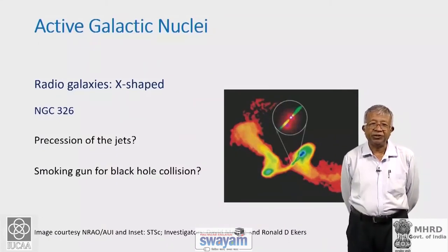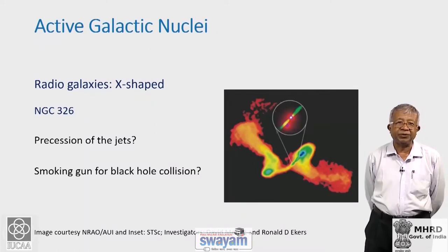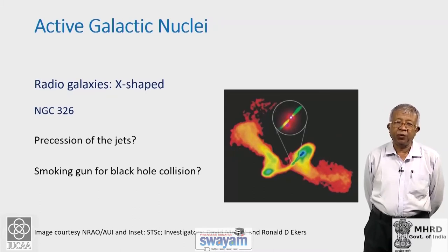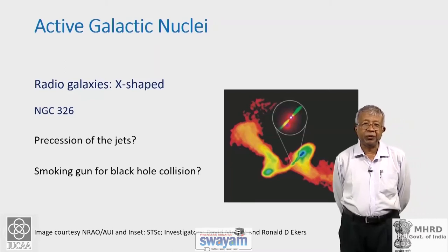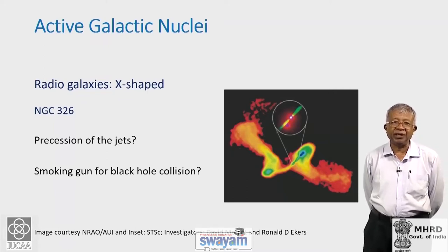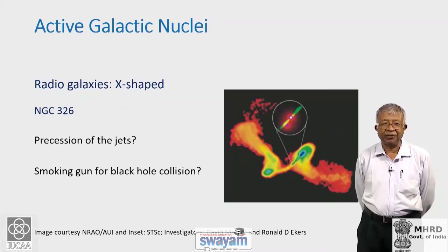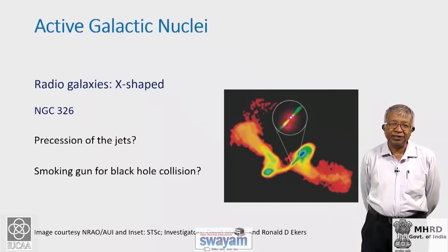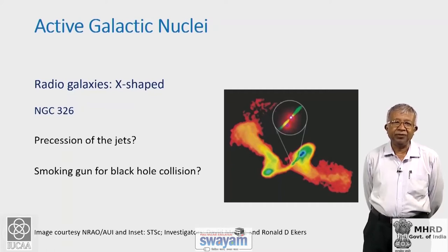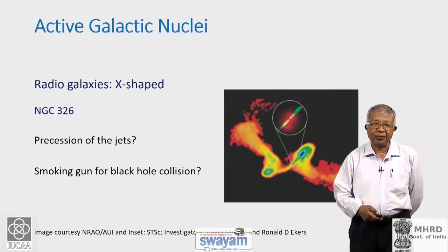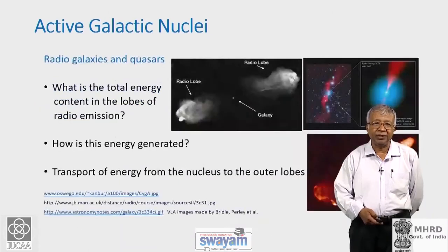Galaxies may also display interesting shapes like the X-shaped source shown here. This is perhaps due to precession of the jets. Whether this is smoking-gun evidence for black holes about to coalesce is often debated, since precession can be induced by interaction with a companion until it stabilizes in a new direction. Today we have evidence from gravitational wave detections that black holes can coalesce, and radio structures can also provide evidence of black hole interactions.